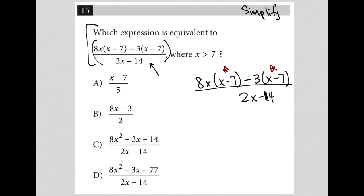So I know that whenever I have that scenario, I can do this. I can group these together into its own parentheses, 8x minus 3. And then I can consolidate the x minus 7s into one set of parentheses. So x minus 7.